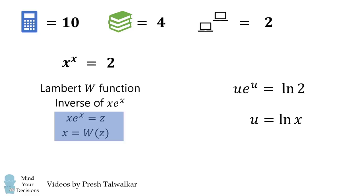We can therefore use the Lambert W function on this equation. We can solve that u is equal to W of the natural log of 2. And that's equal to the natural log of x, so we take e to the power of that on both sides, and we can solve that x is equal to e to the power of W of the natural log of 2.